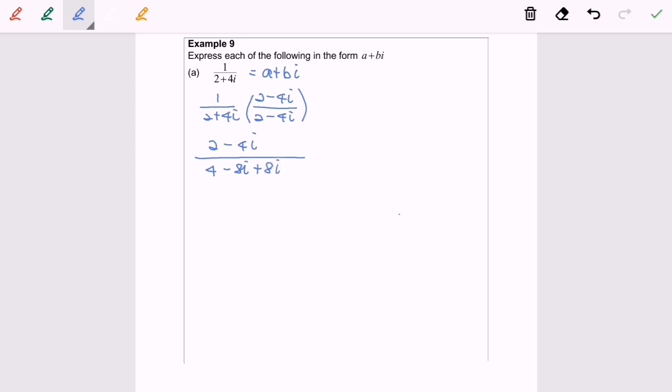As we all know, i squared is equal to negative 1. So rewrite: 2 minus 4i over 4 plus 16. Because here we can simplify, the middle terms become 0. So finally our answer will become 2 minus 4i over 20.